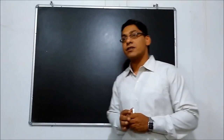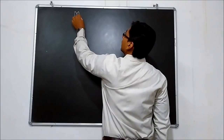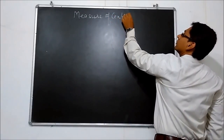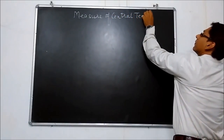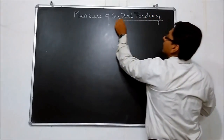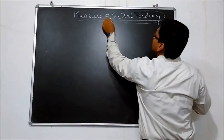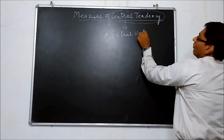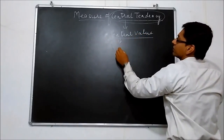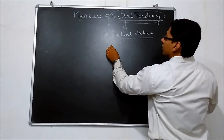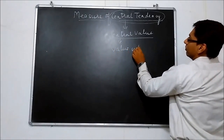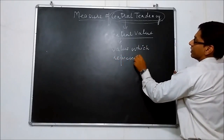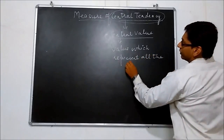So for the analysis of data, the first method is measure of central tendency. Central tendency means the central value — a value which represents all the data.